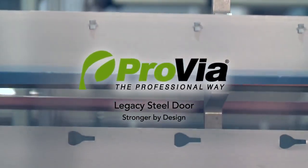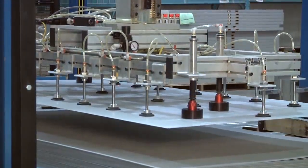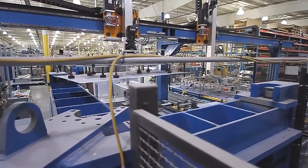At Provia, 20-gauge steel and 20 tabs and slots make all the difference. Our heavy 20-gauge steel doors give you 49% more galvanized steel than a standard 24-gauge door.